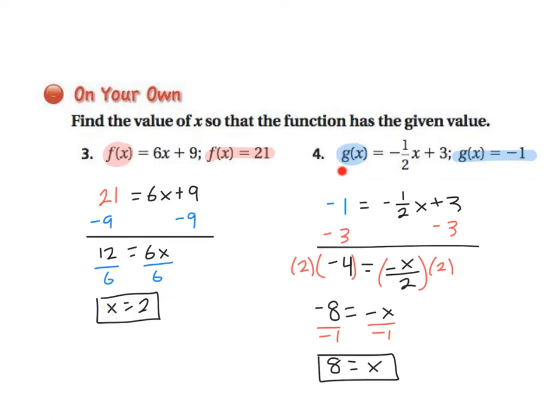Same idea, I'm substituting my output g of x with negative 1. And then inverse operation, subtract by 3. Notice I wrote negative 1 half x as negative x divided by 2. So I multiply both sides by 2 and then divide both sides by negative 1. So we get x equals positive 8.